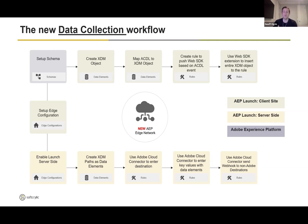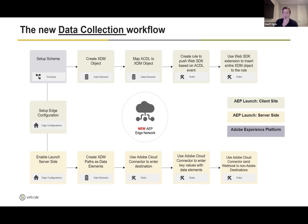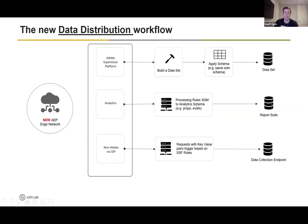The second step, if you want to take it further, is to enable server-side forwarding in a server-side Launch property. What you need to do is set up an edge configuration and enable Launch server-side. From there, you'll create XDM paths — taking that same schema and XDM path — and configure them as data elements within the Launch property. You'll use an application called Adobe Cloud Connector to enter the destination of your choosing, map those data elements to key-value pairs, and use either a GET or POST request to send the data. Then we'll hop into the demo.